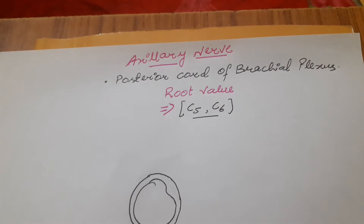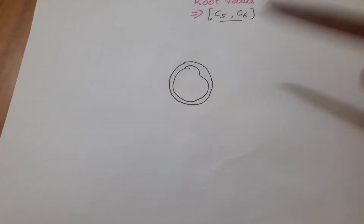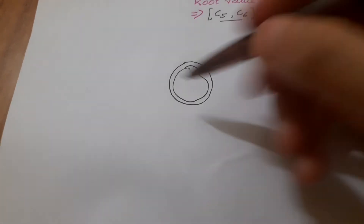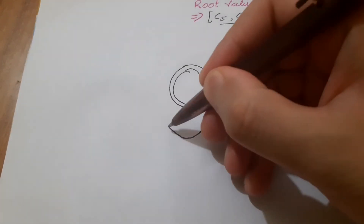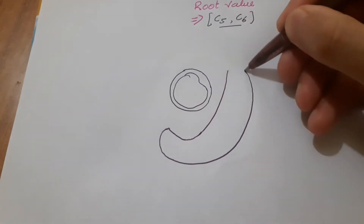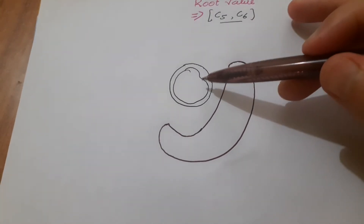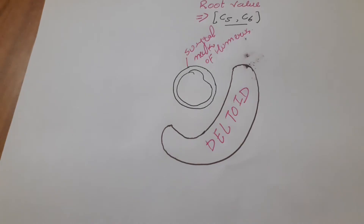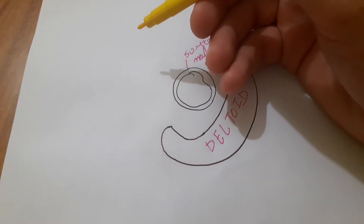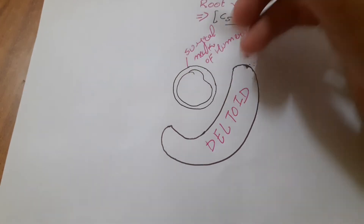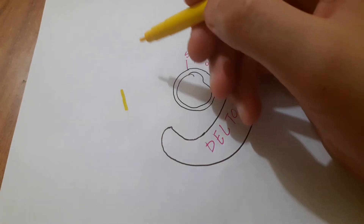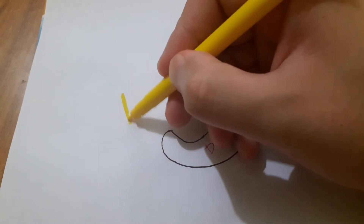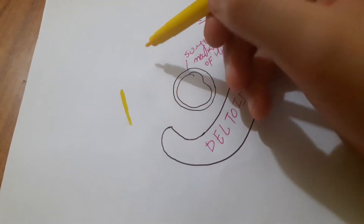Let's look at our diagram. This is the surgical neck of the humerus, and this is the deltoid muscle. The axillary nerve is present around the surgical neck of the humerus. This is the main nerve trunk, and after running, it divides into two branches.